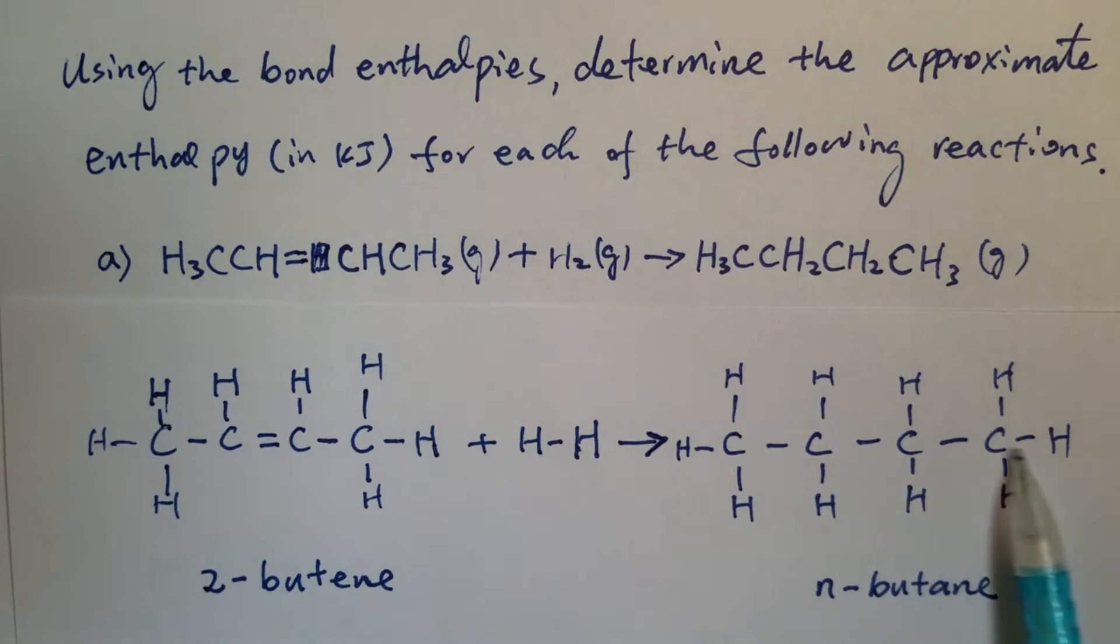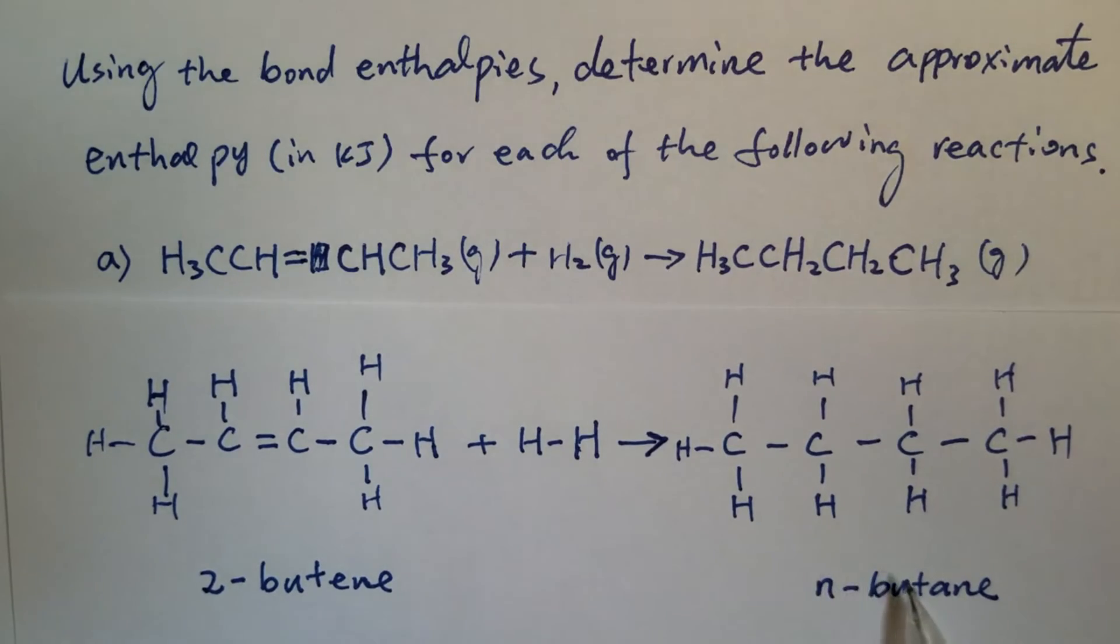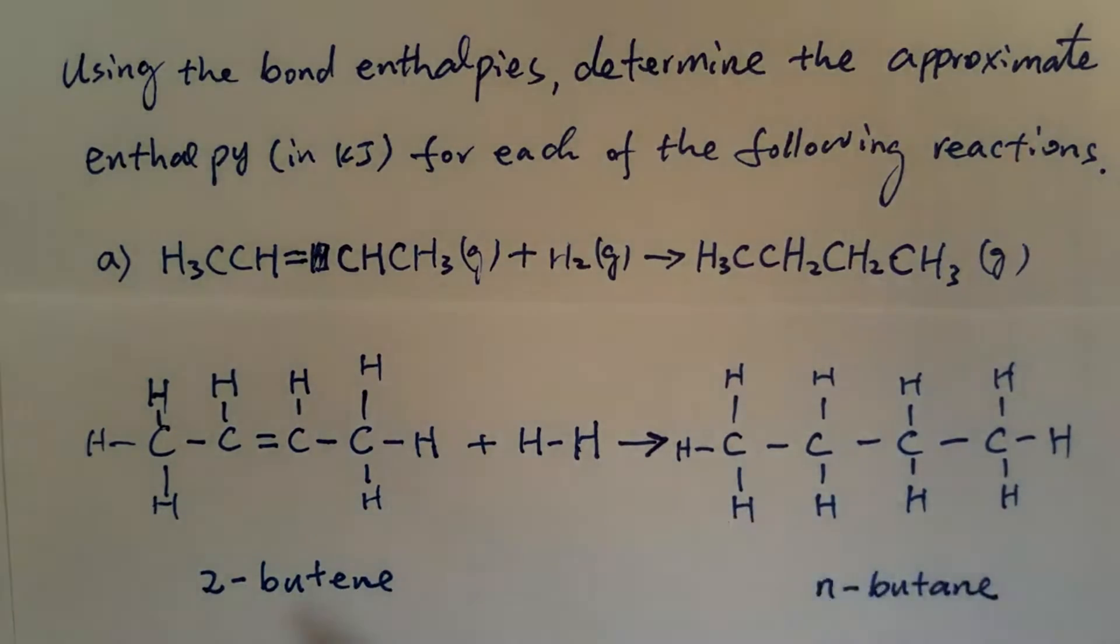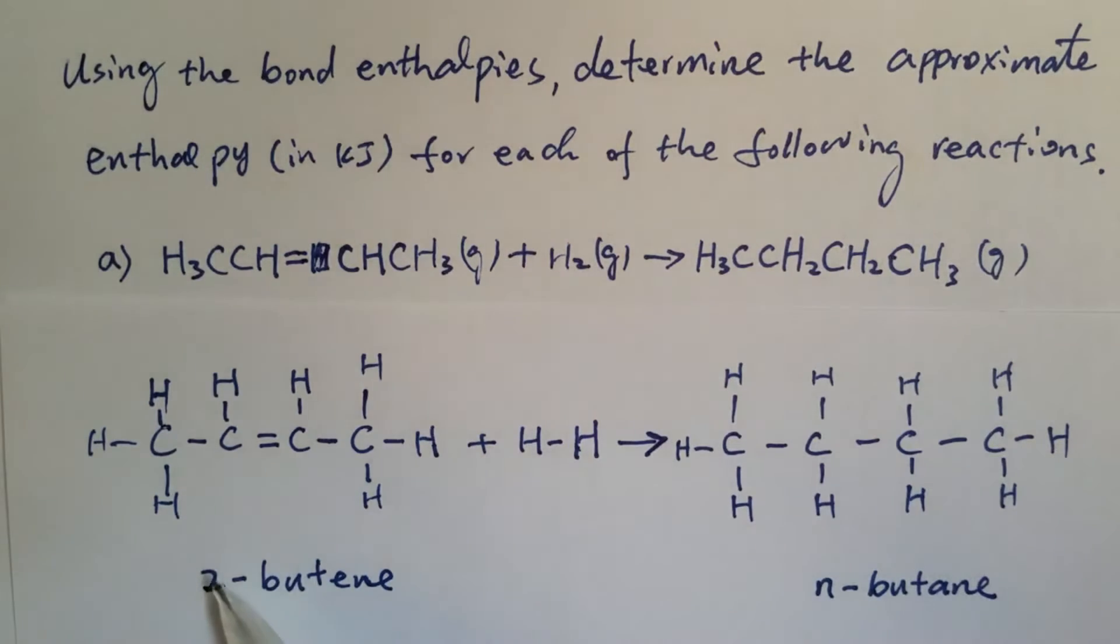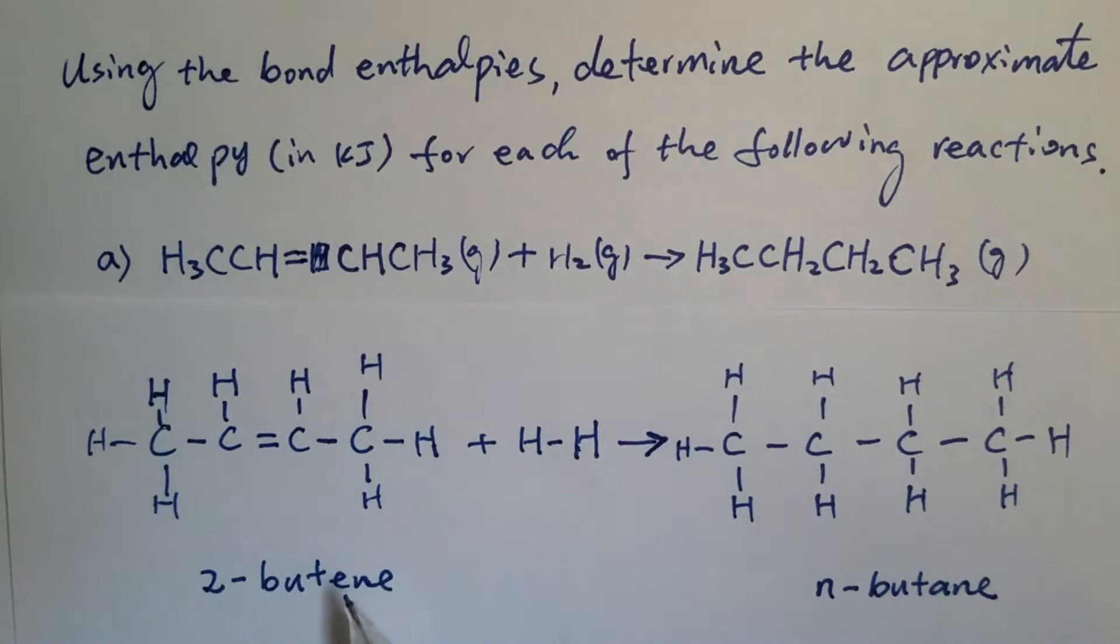We call that n-butane, B-U-T-A-N-E, and n means normal. When you learn organic chemistry, you would learn more about the nomenclature. And this one has a double bond, and two means the location of the double bond. That's carbon one, carbon two, three, four - that's why we call that 2-butene, B-U-T-E-N-E. Whenever you see T-E-N-E, that means there is a carbon-carbon double bond in there. Knowing the structures, it's easier to solve this problem.